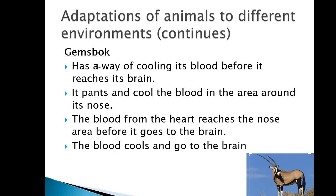Now moving on to the adaptations of animals to different environments. Today we are going to discuss the gemsbok. The gemsbok has a way of cooling its blood before it reaches its brain. It pants — panting is a cooling system used by animals, mostly mammals. When it pants, it cools the blood in the area of its nose before it goes to the brain.